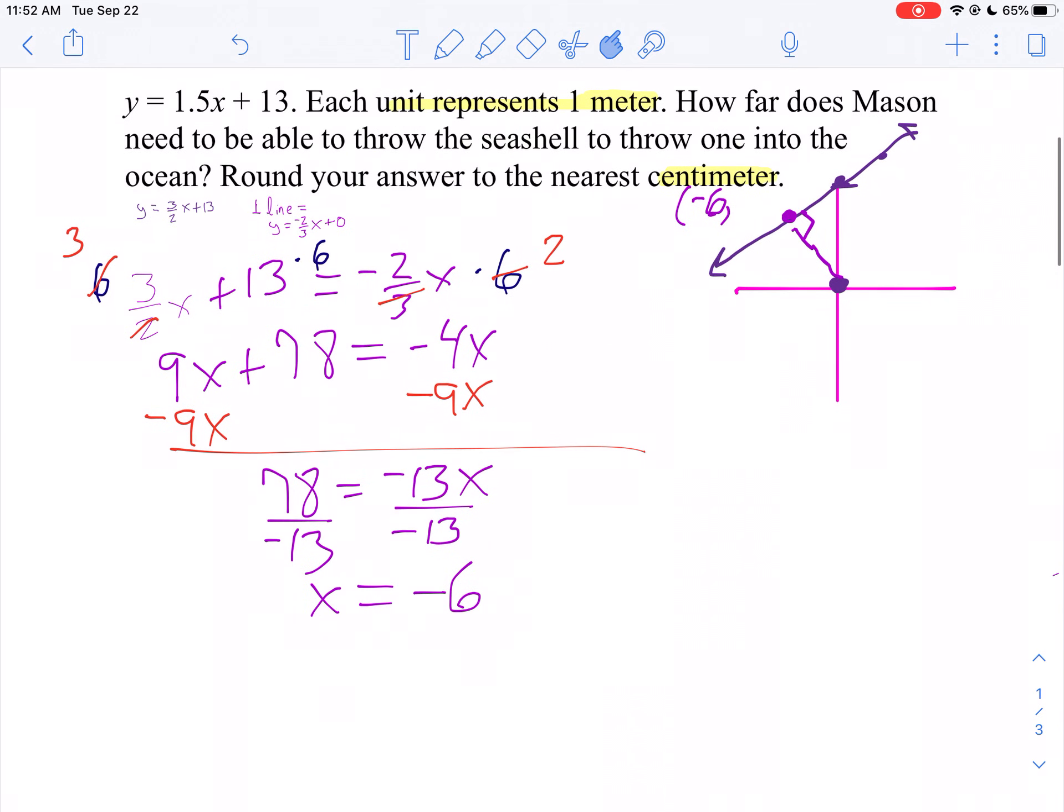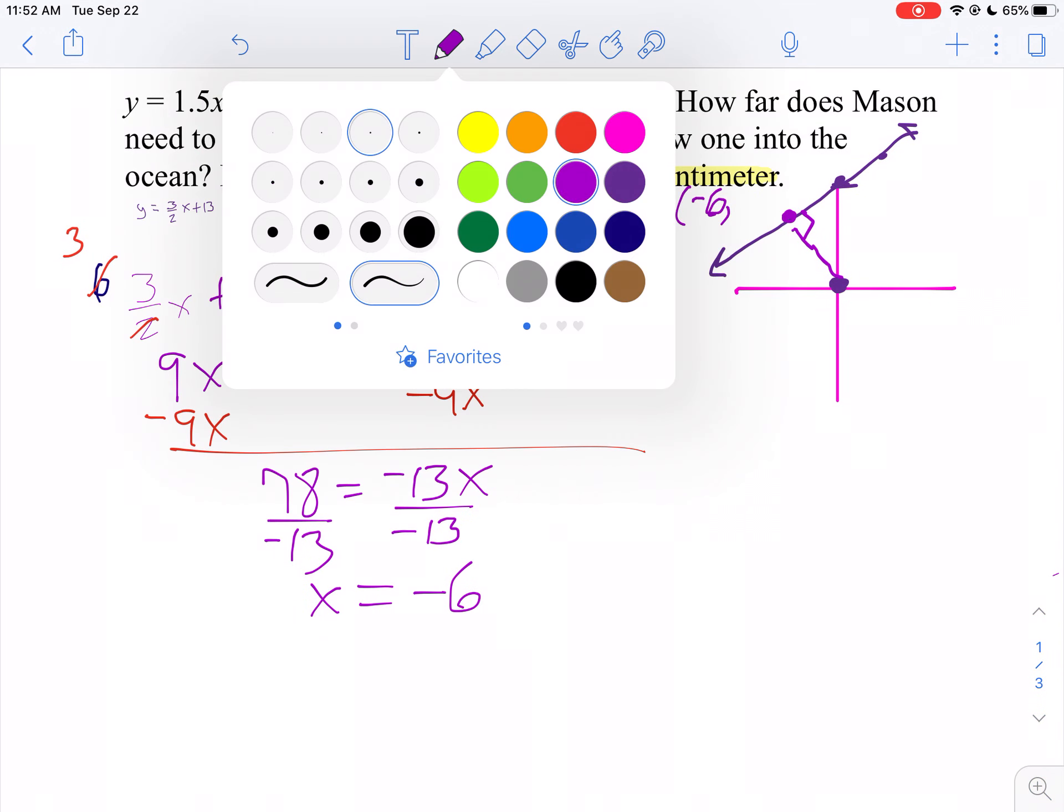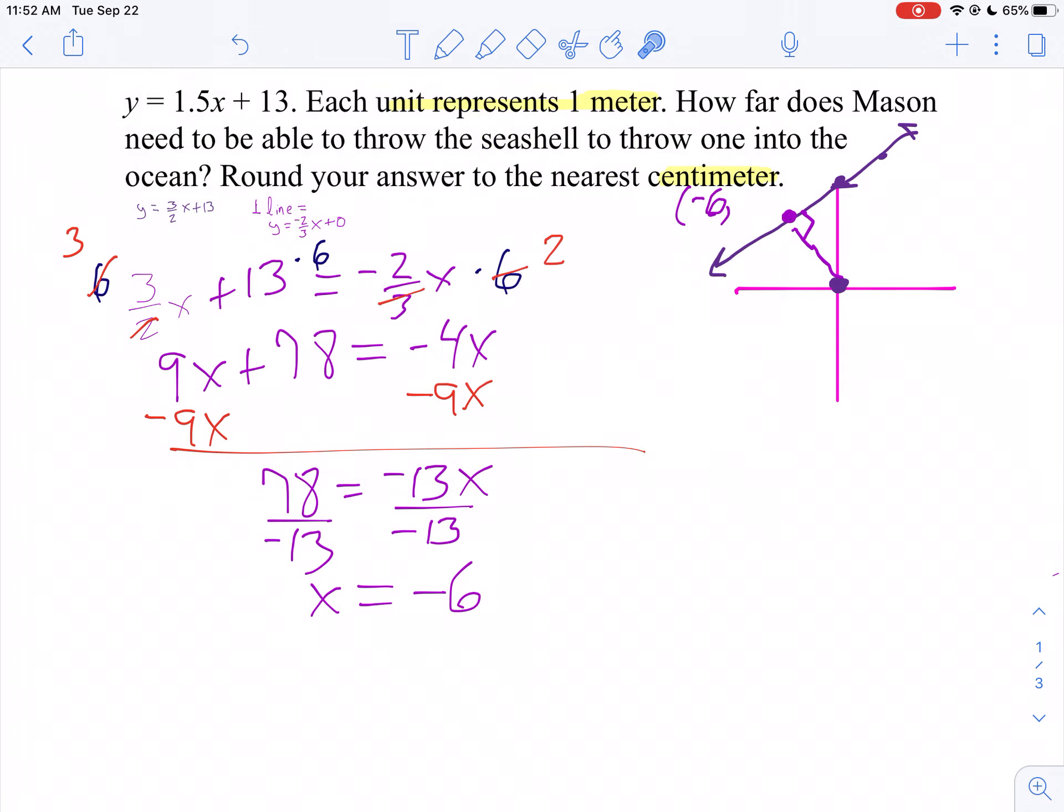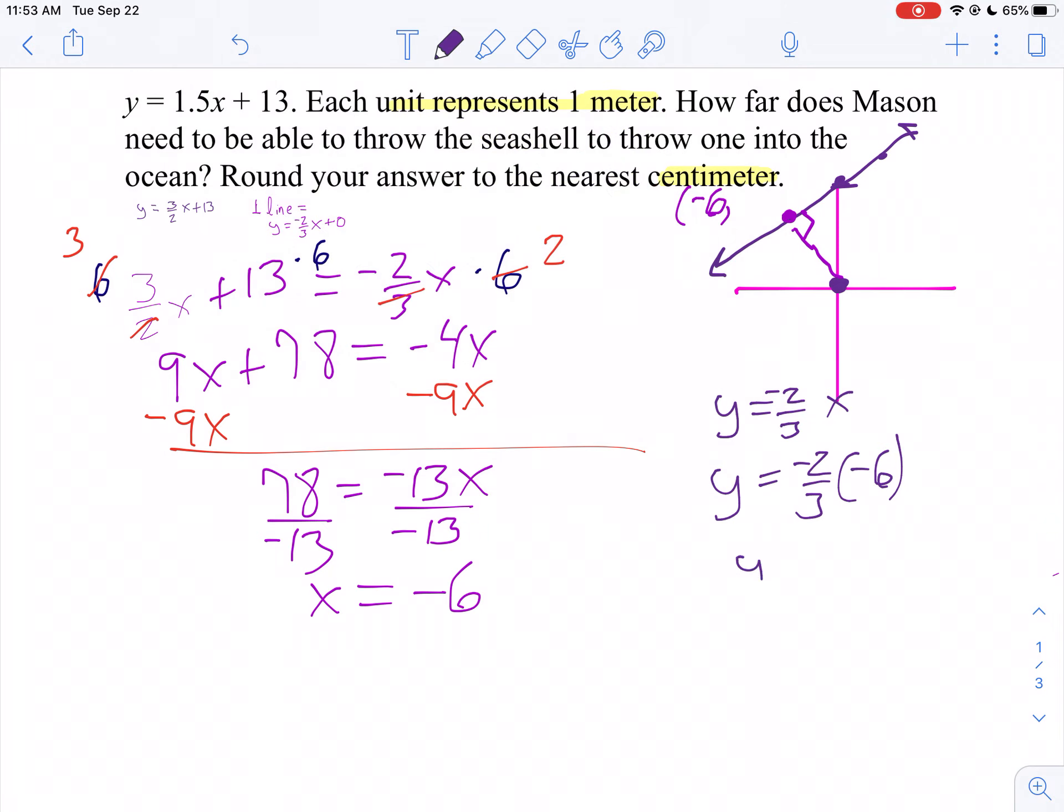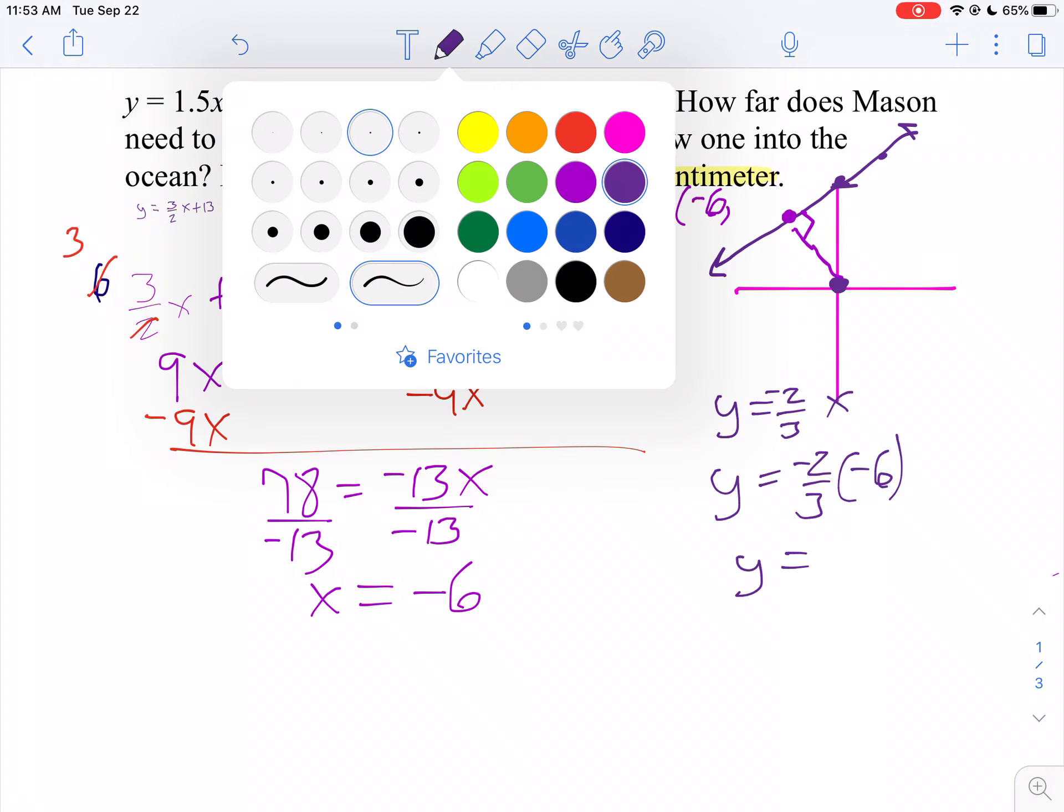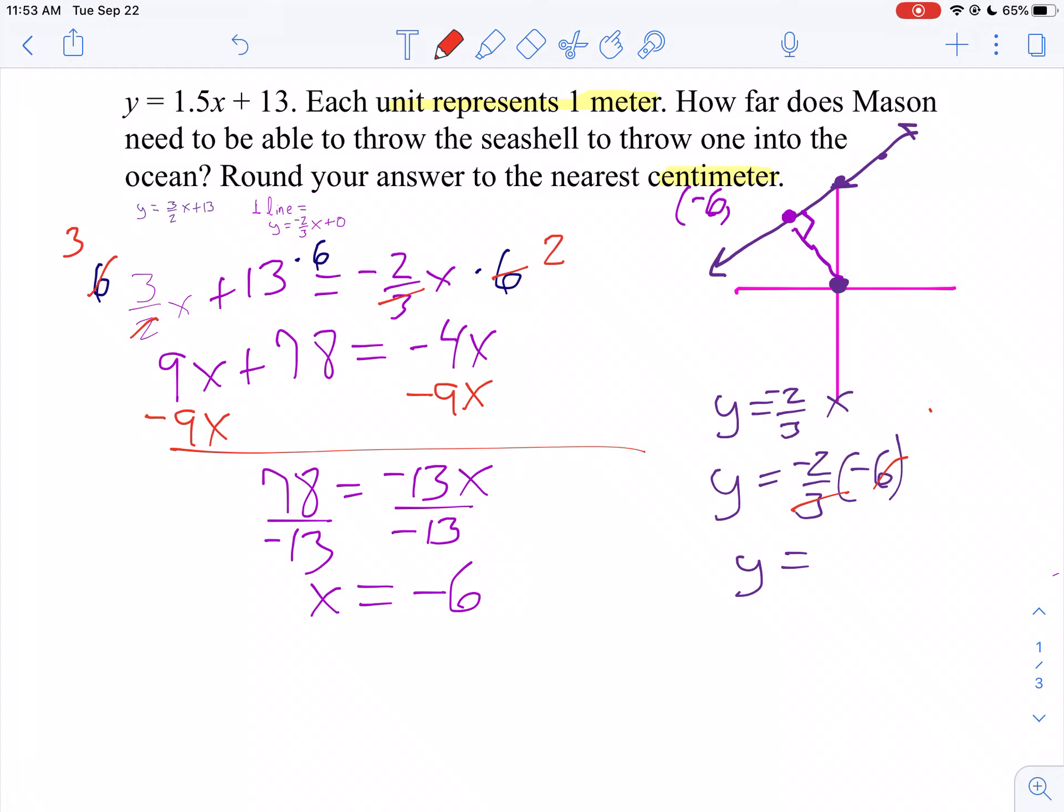Now let's find the y-coordinate. You can use either equation here. The one that seems simpler to me is y equals negative 2 thirds x. So y equals negative 2 thirds times negative 6. A negative times a negative is a positive. So y is going to be positive. Well, 3 goes into 6 twice, so 2 times 2 is 4. So my coordinate is negative 6, 4.